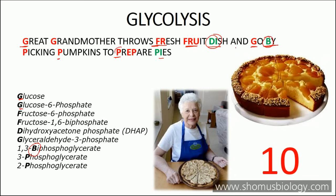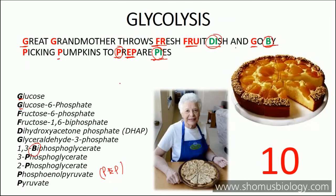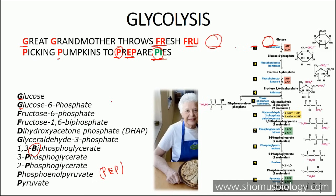Then 'prepare' stands for PEP — phosphoenolpyruvate. And finally, 'pies' stands for pyruvate. So starting from glucose and ending in pyruvate, those are all ten different intermediates of glycolysis, which you can also see listed in the actual textbook by Nelson and Cox.